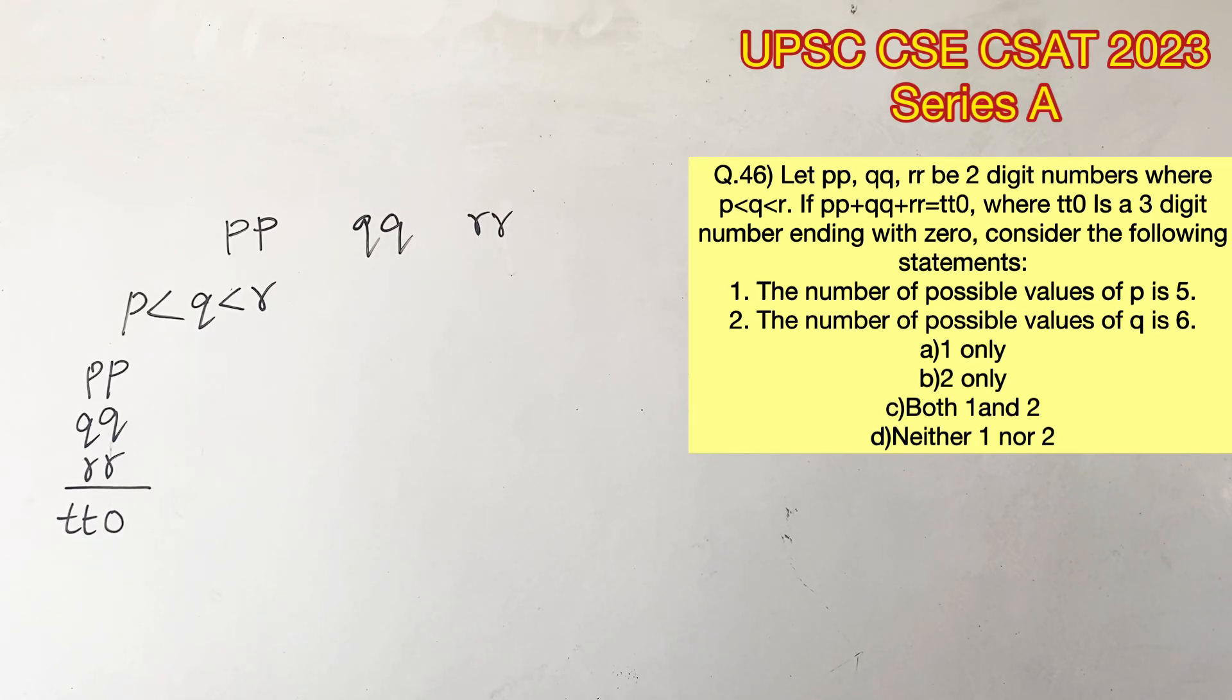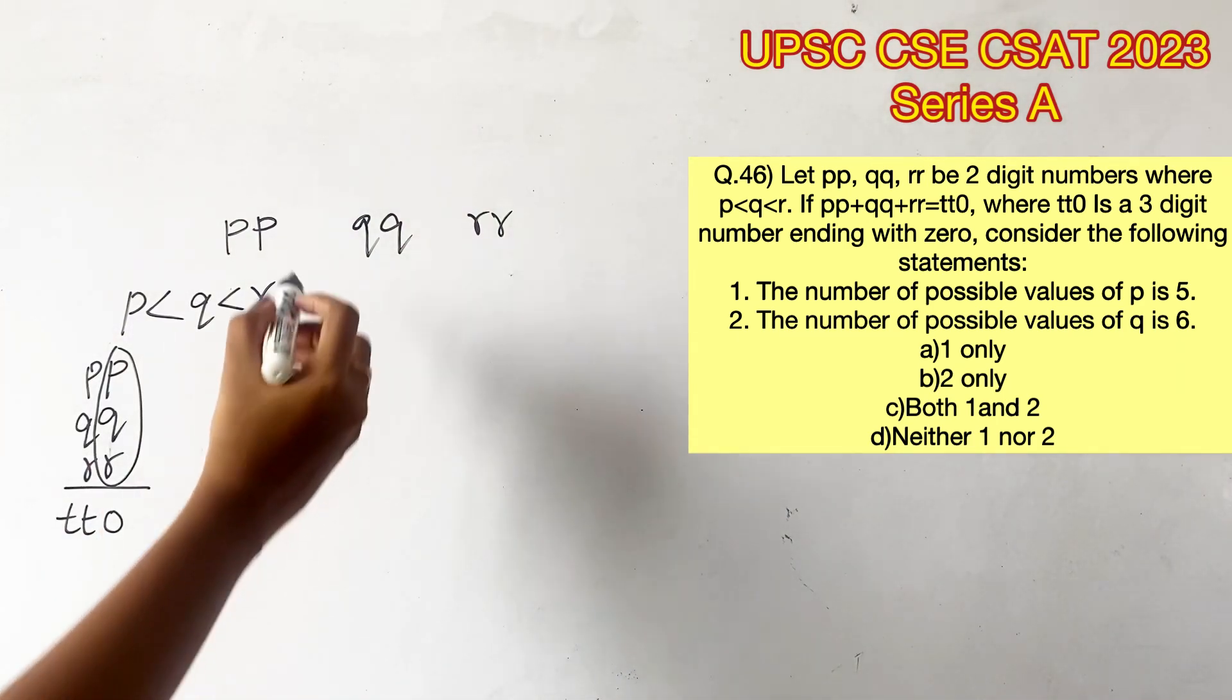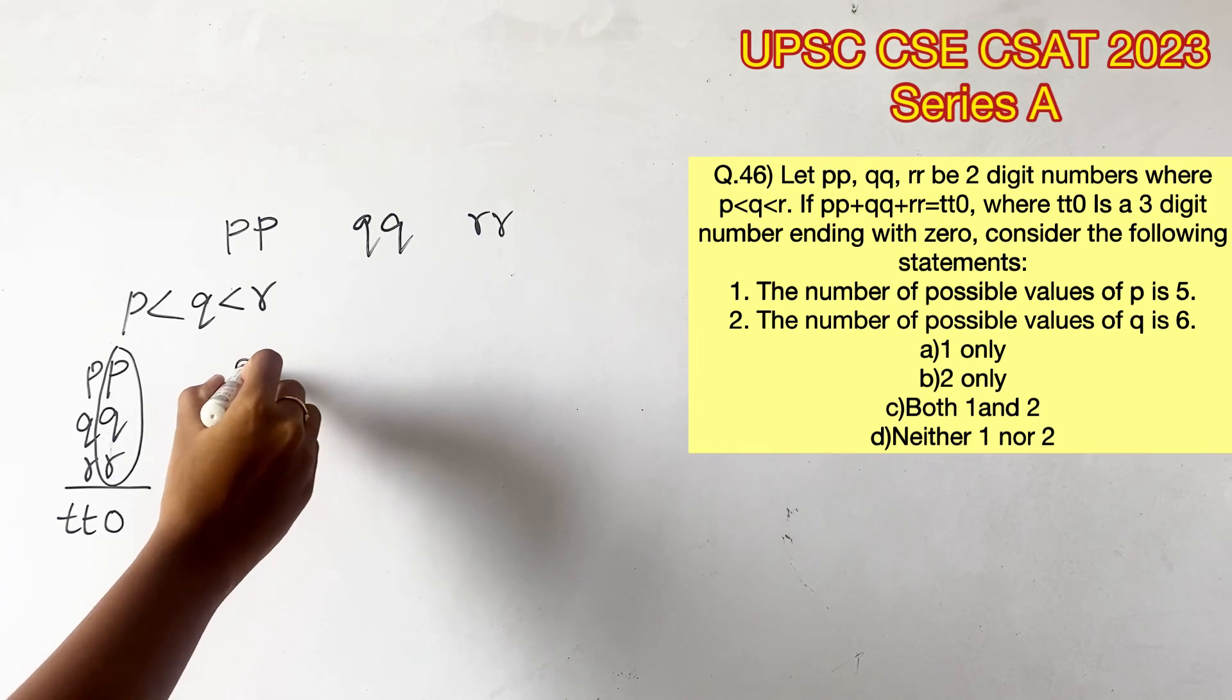If you consider P, Q, and R that are in the ones place, it is evident that summing them up should give a value that ends with a zero.